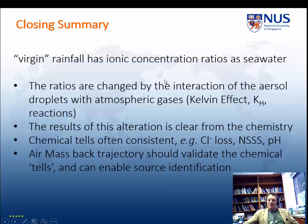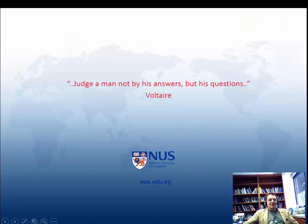In summary: virgin rainfall has the same ionic concentration ratios as seawater. Those ratios are changed by the air mass trajectory, what the aerosols go through, and then how those aerosols are mopped up. As precipitation chemists, we seek to find a unified explanation for some of those changes. Good luck, enjoy the practical, and I'll see you later. Bye-bye.